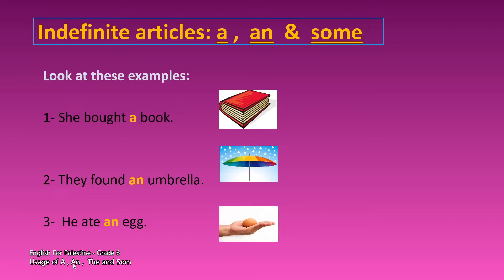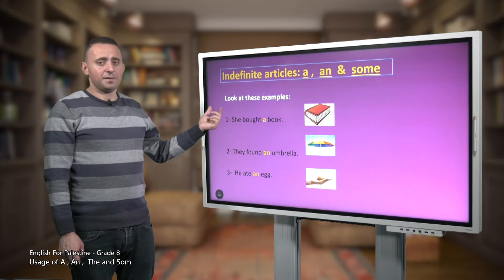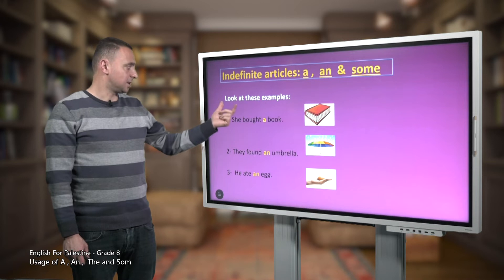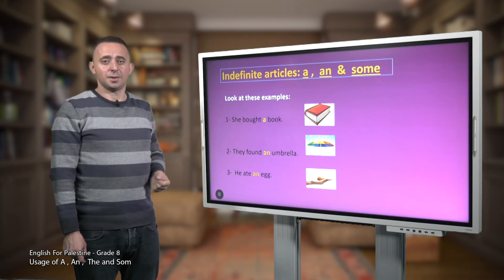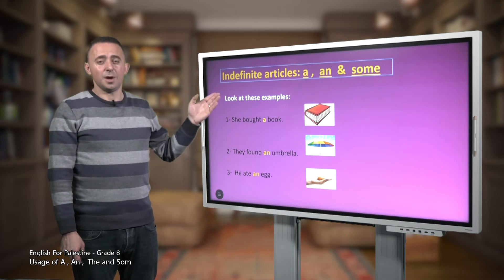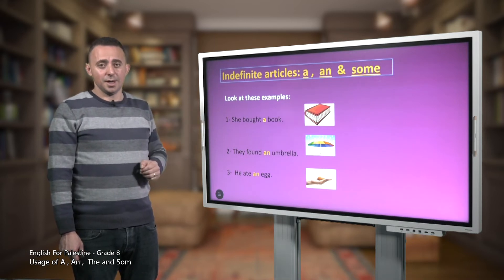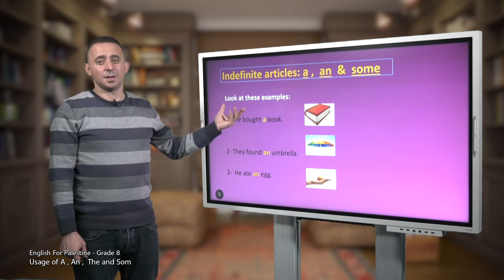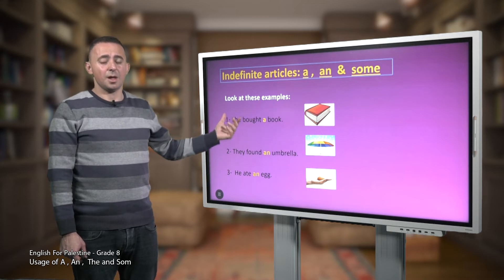Let's have a look at these examples. We have pictures with examples. Number one: she bought a book. Notice the indefinite article 'a' is followed by a singular noun, not plural. Because a and an are followed by singular nouns. Notice the word 'book' starts with a consonant sound — a book.